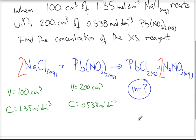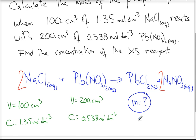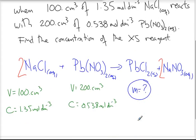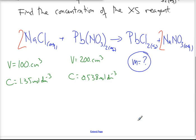Finding the mass of lead chloride tells us this is a theoretical yield problem. For theoretical yield problems, the first thing I need to do is find the limiting reagent. We already have concentration and volume. Since c = n/V, we can rearrange to n = c × V. We have volume in centimeters cubed, so we convert to decimeters cubed by dividing by 1000, and then use those two pieces of information to get the number of moles.